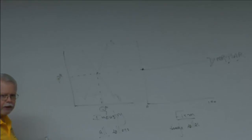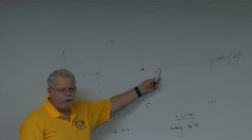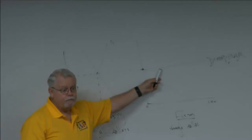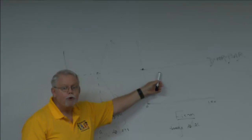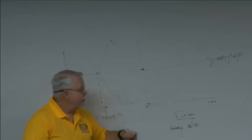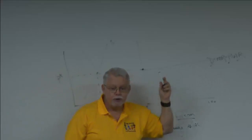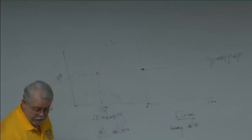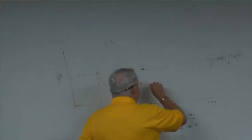You'll have questions like: here's the demand curve — what can you tell me about the number of sellers? Very large. What can you tell me about their size? Very small. What can you tell me about information? Perfect. That's the giveaway for perfect competition. Then the graph will include a marginal cost curve.